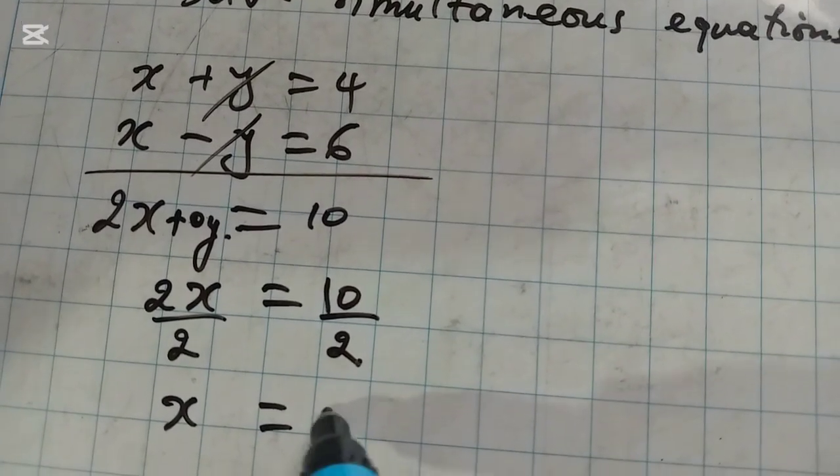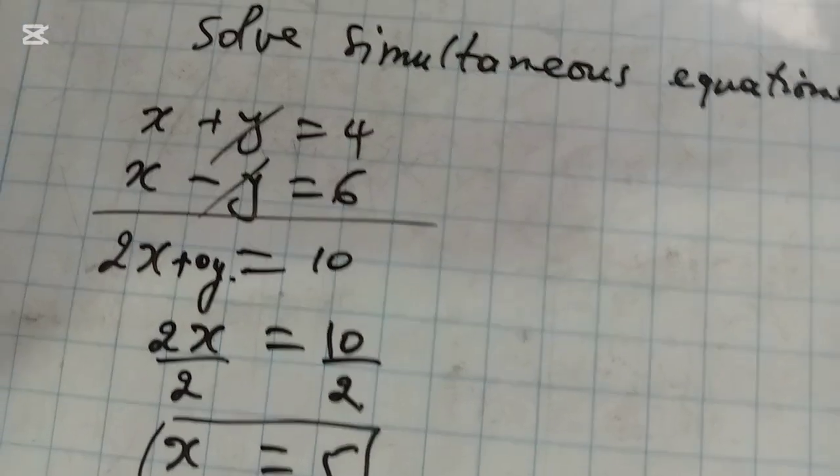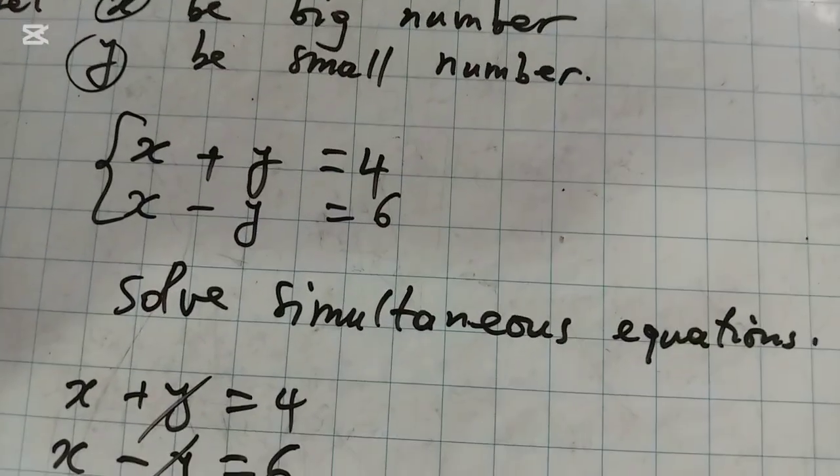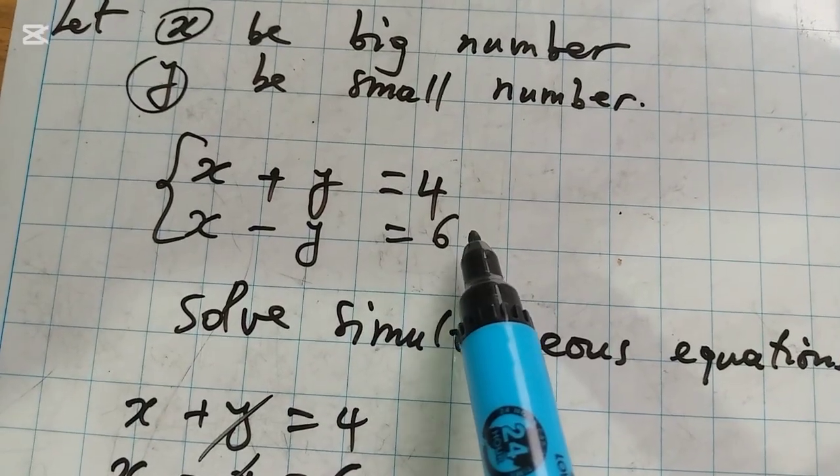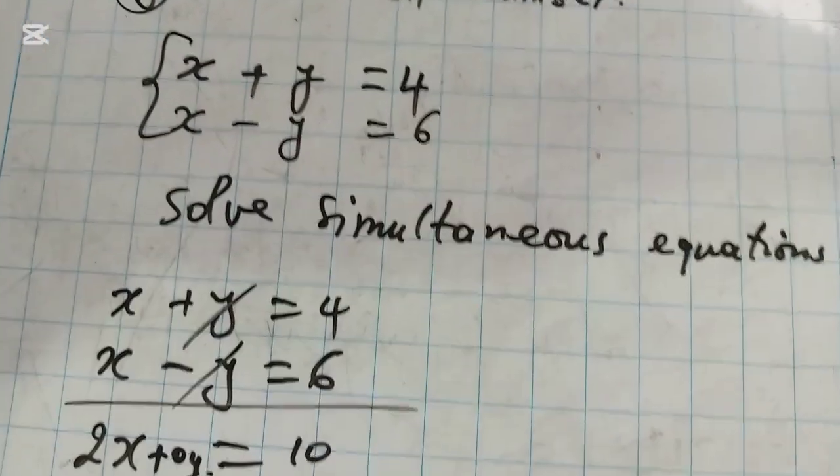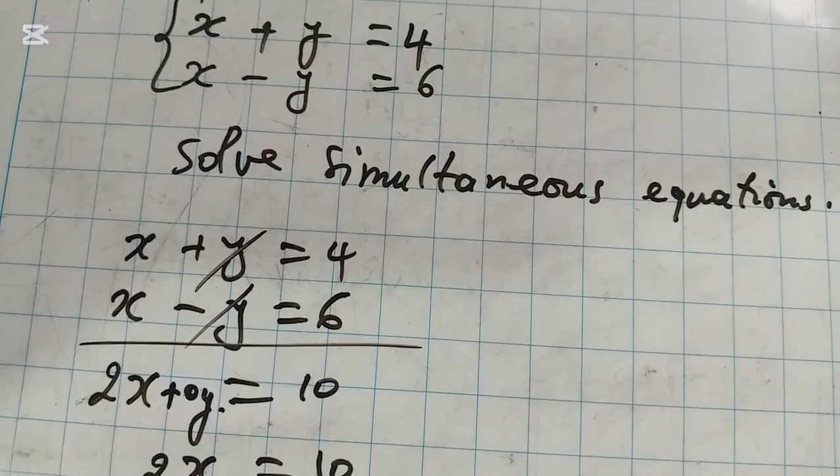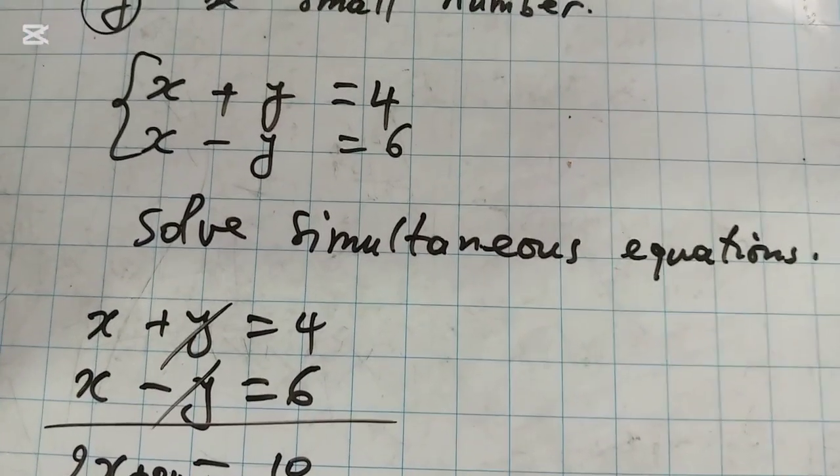X is equal to 5. And you know that X plus Y equals 4. If X is equal to 5, we substitute this X by its value.